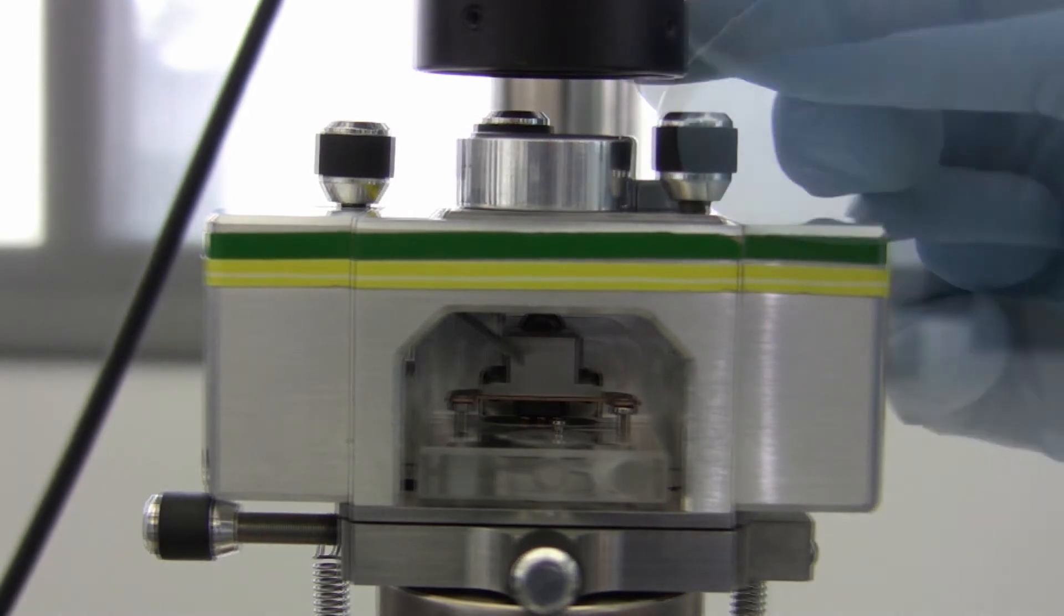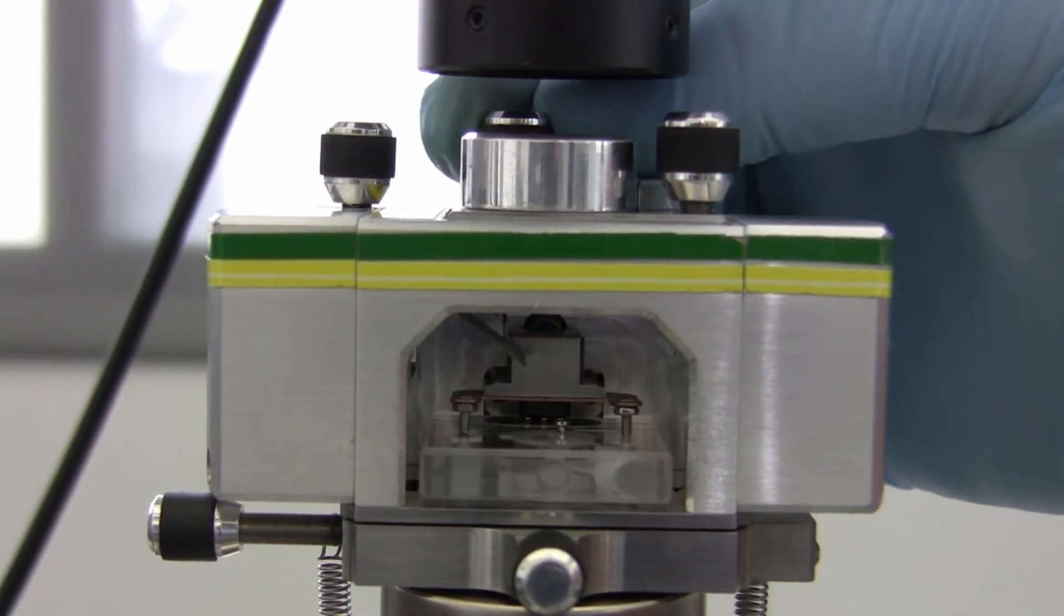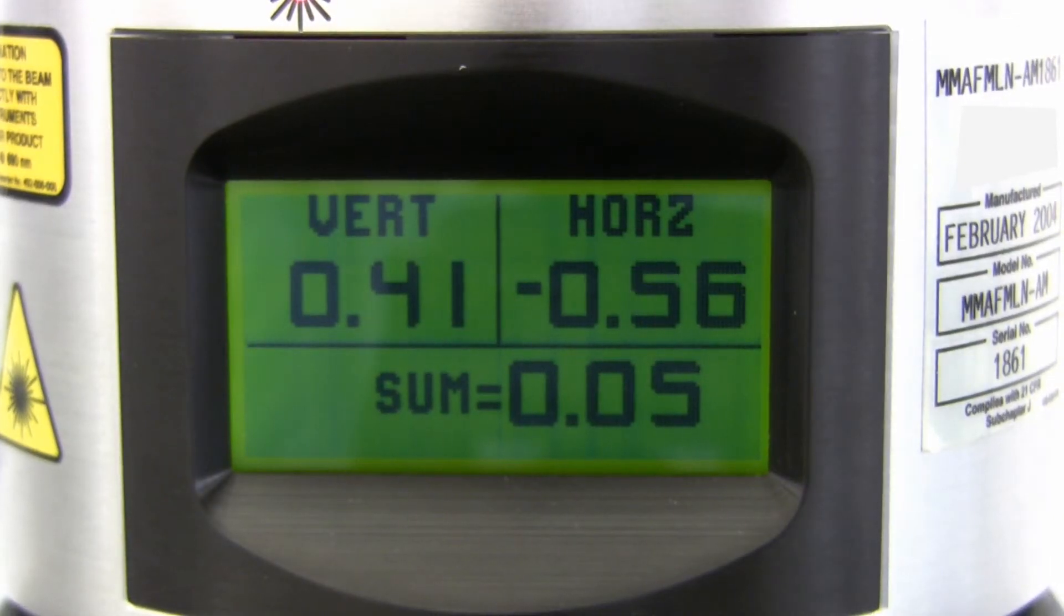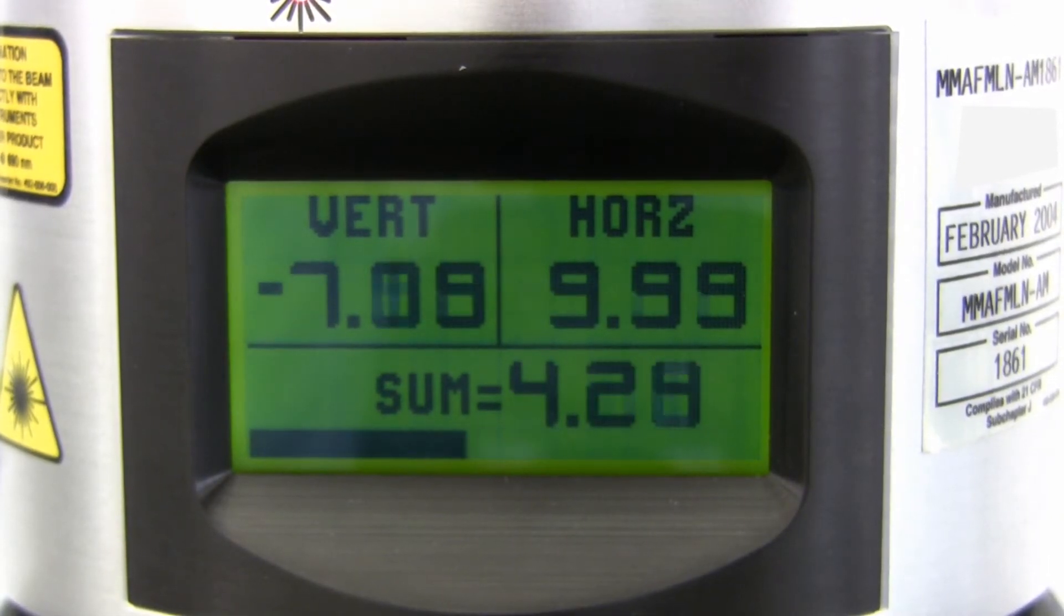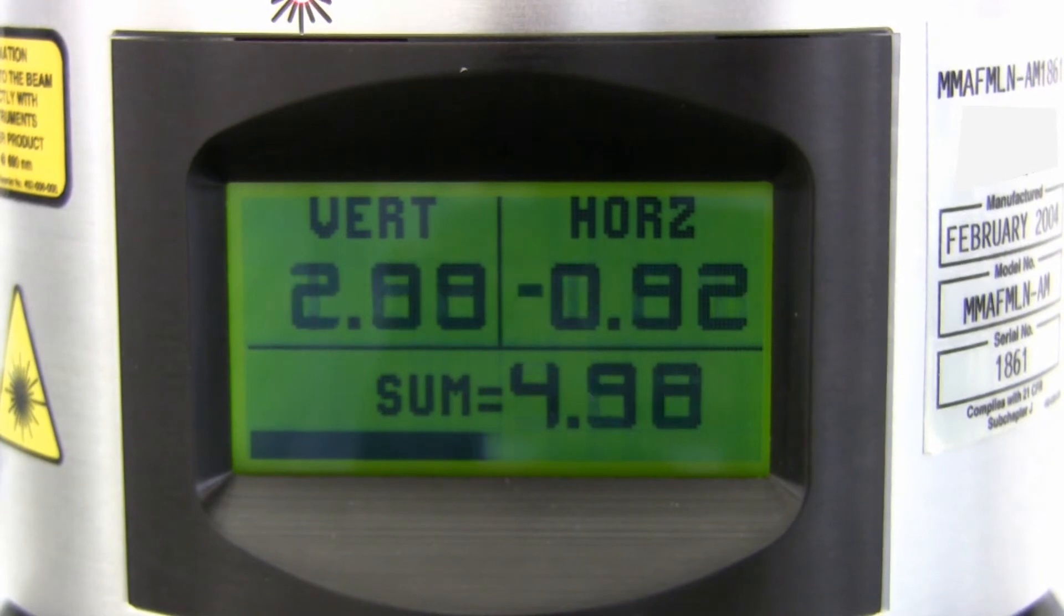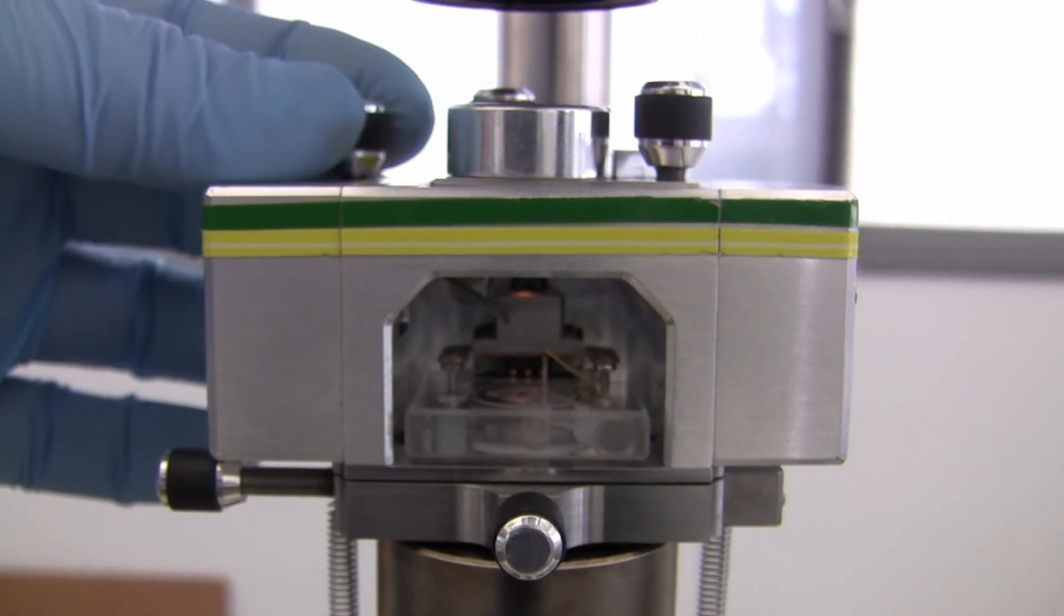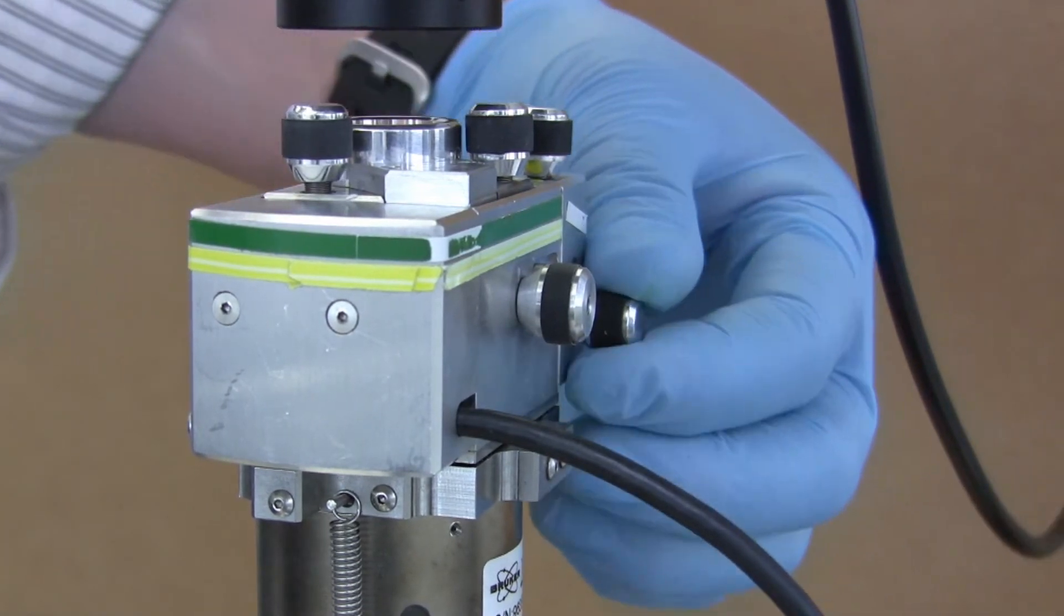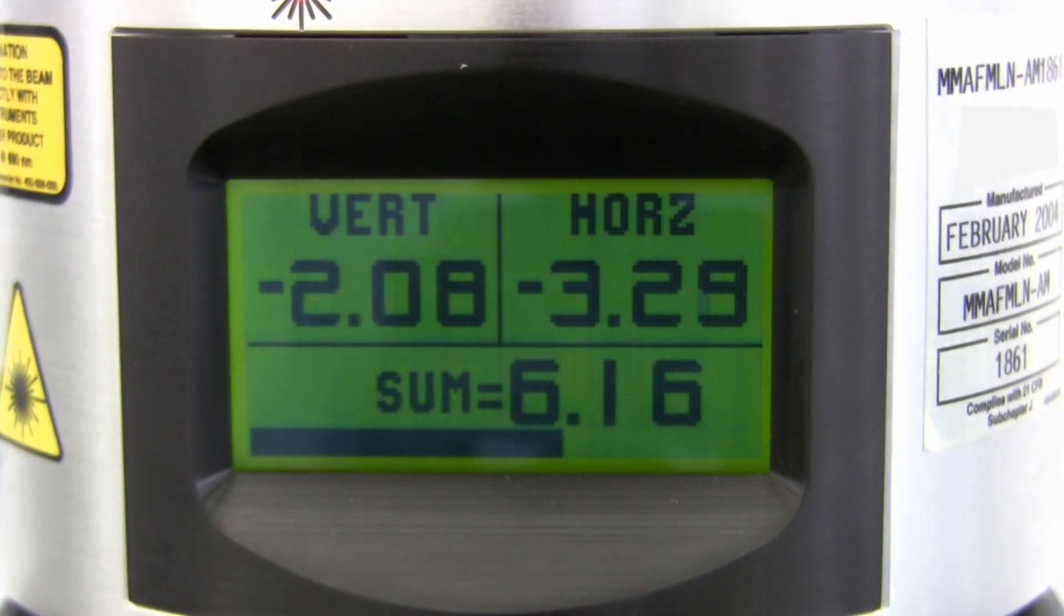Adjust the laser positioning knobs to center the laser spot onto the probe. Watch the sum value on the LCD display to observe when the value increases. Rotate the detector position knobs on the top left and rear of the head to center the vertical and horizontal signals as close to zero as possible.